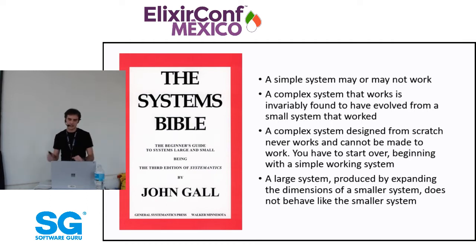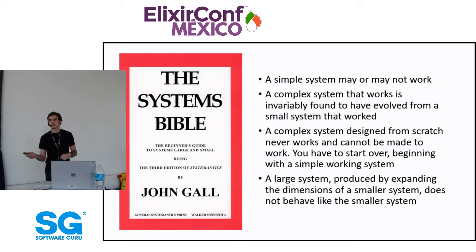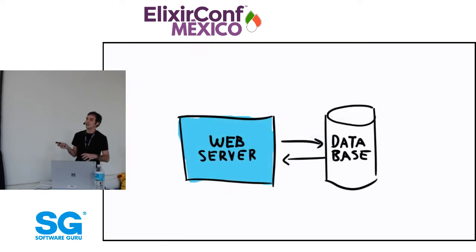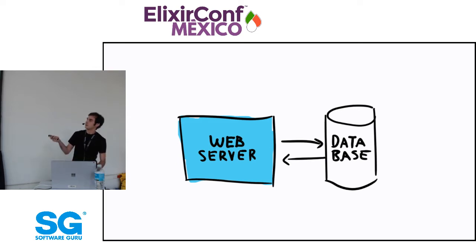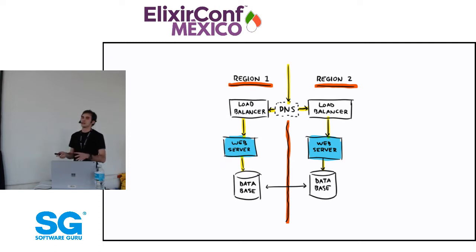The last lesson from the System Bible here: a large system produced by extending the dimensions of a smaller system does not behave like the smaller system. Behavior is not just what the system does — it's also how it dies and how it fails. The failure modes of a smaller system are different from those of a larger one. The larger system can survive a single node dying, but net splits and weird issues are no longer the same as in the smaller system.